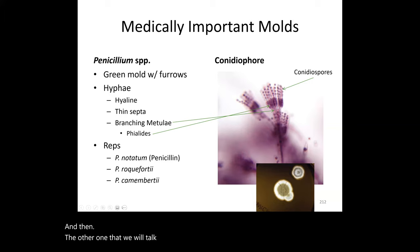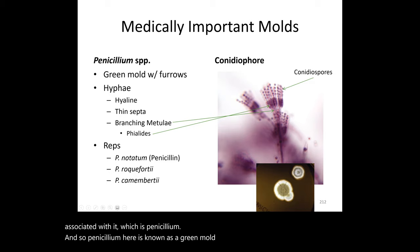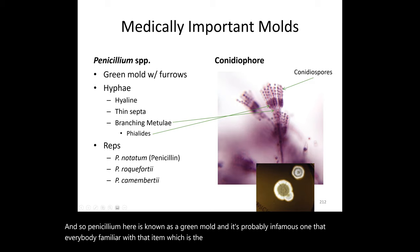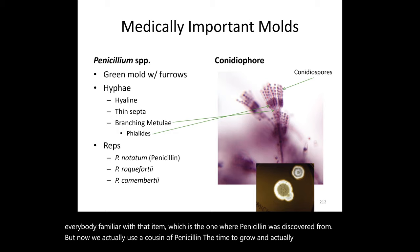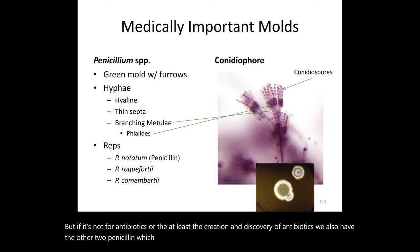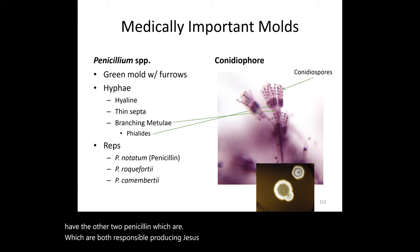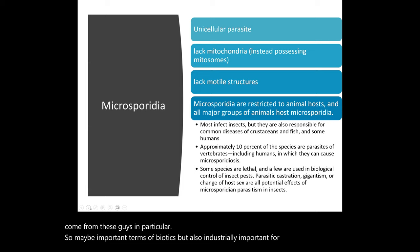The last notable mold is Penicillium — the green mold. Penicillium notatum is the famous species from which penicillin was discovered, though a cousin of it is now actually used to produce penicillin and its derivatives. Penicillium roqueforti and Penicillium camemberti are responsible for producing Roquefort and Camembert cheeses respectively. So Penicillium is both medically important for antibiotics and industrially important for food production.